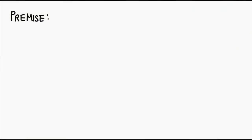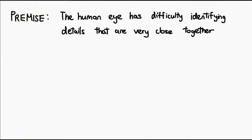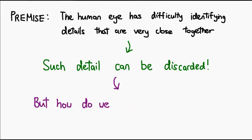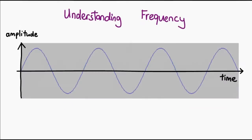The second method also does something along these lines. The human eye has a more difficult time seeing changes in detail that are all close together, so we can discard such detail without suffering from an apparent loss of quality. This is where things get a little bit more complicated. In order to find such details, we have to represent an image in terms of its frequencies. To understand this better, let us first take a look at frequency in the context of sound.